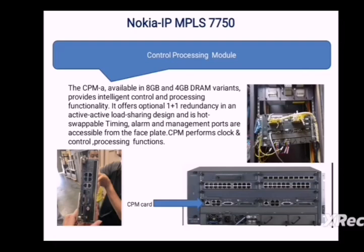You may start the commissioning process for a new node by logging in through the CPM card. It also has 4 GB or 8 GB of DRAM available, where files are saved — such as site configuration scripts that you upload to the Nokia IPM PLS router to start the commissioning process.